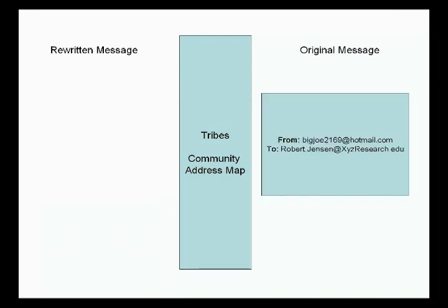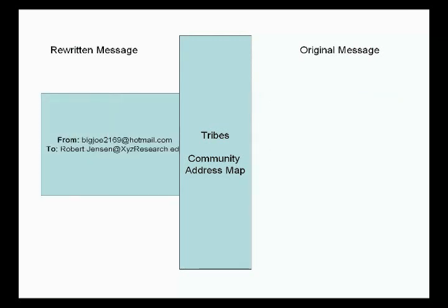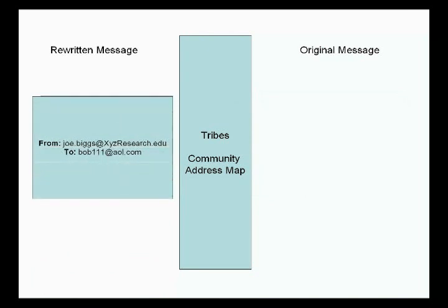Similarly, when Joe replies to Bob, the Tribe's community address map again translates his from address to appear as though the message was from joe.biggs at xyzresearch.com, and delivers the message to Bob's personal account without Joe's needing to be aware of it.